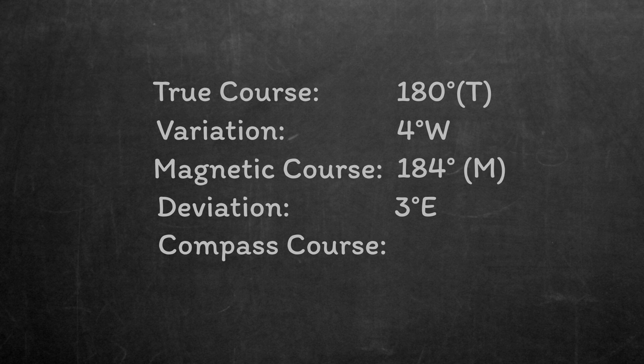For compass, we know that deviation east, compass is least. So compass is going to be less than magnetic, so we take 3 degrees away from 184 to find the compass course is 181 degrees compass.